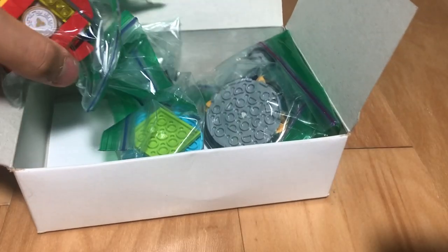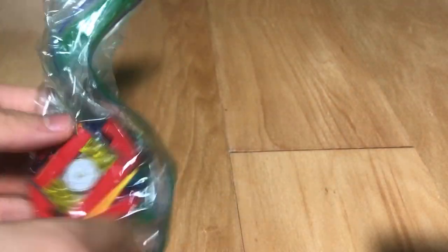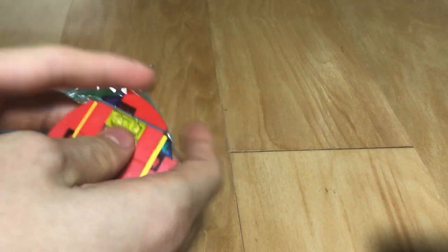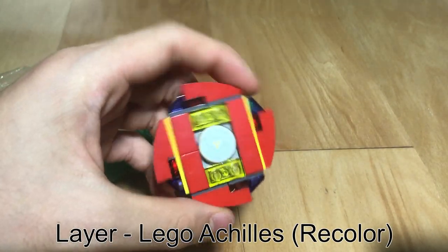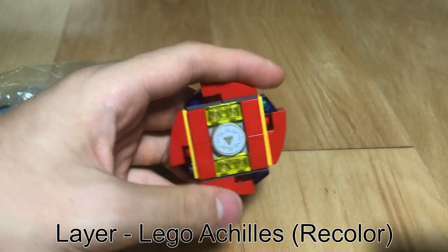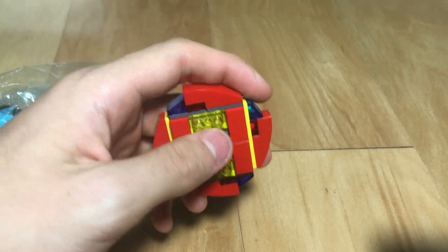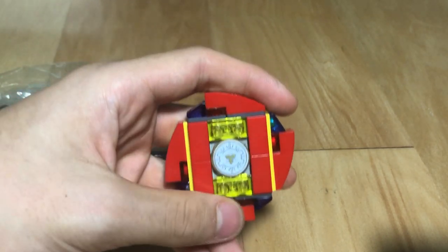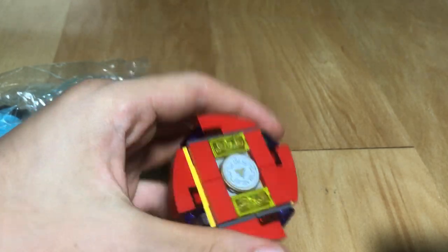First up we have our layer, LEGO Achilles. So this is a slight recolor. It's got some transparent here on the outside, on this chip I think from something that's from Zeus, and just a bunch of red, pretty normal colors.